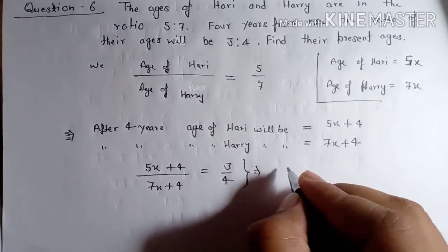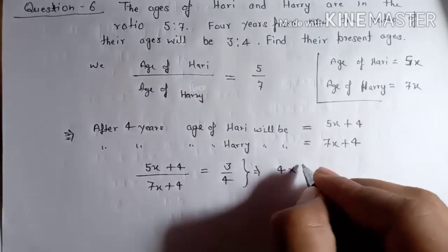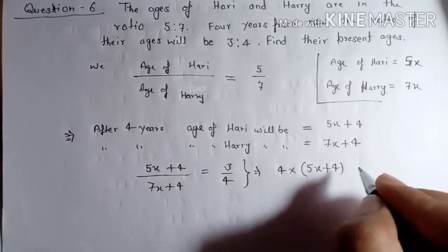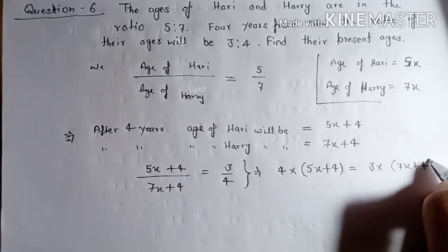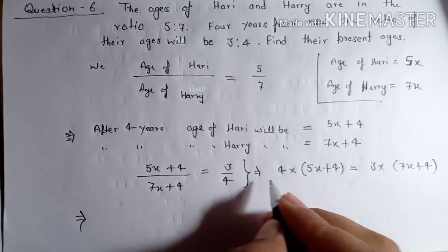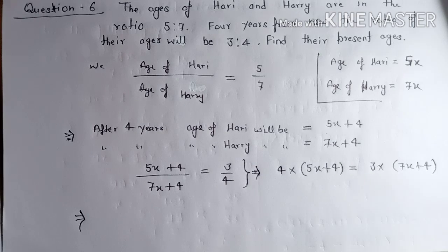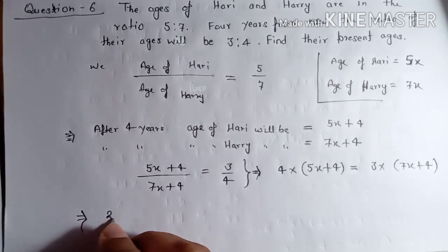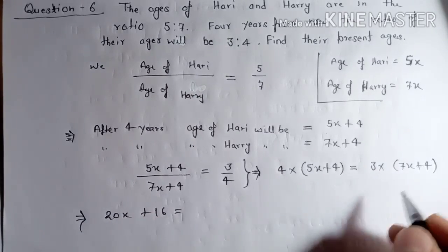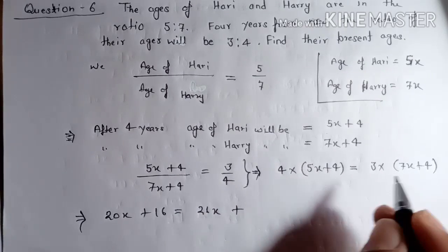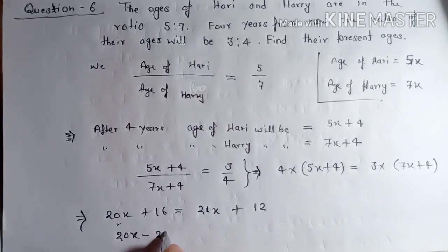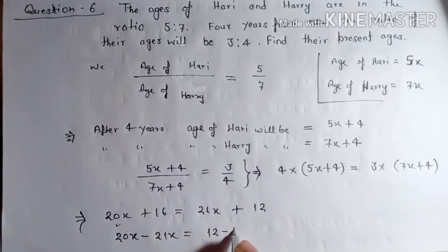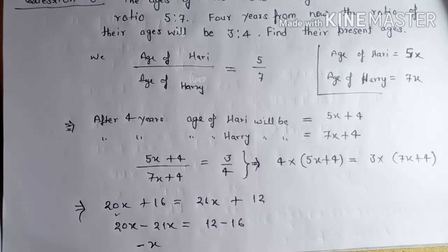Now cross multiply: four is multiplying five x plus four, and three is multiplying seven x plus four. So four times five x is twenty x, and four times four is sixteen, equal to three times seven x which is twenty-one x, plus three times four which is twelve. Transposing: twenty x minus twenty-one x equals twelve minus sixteen.